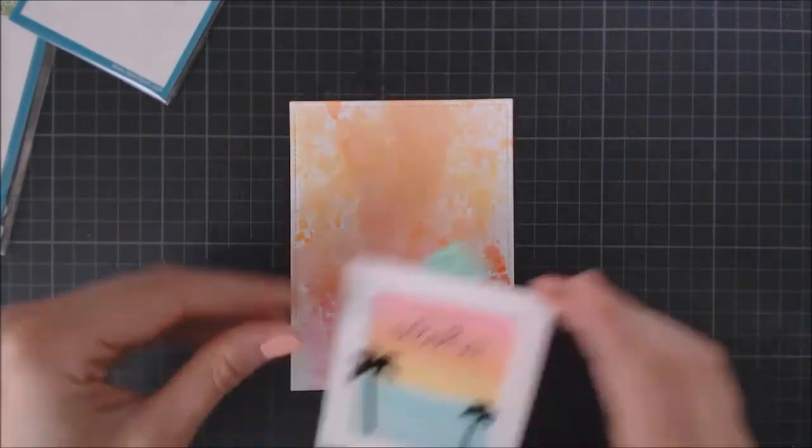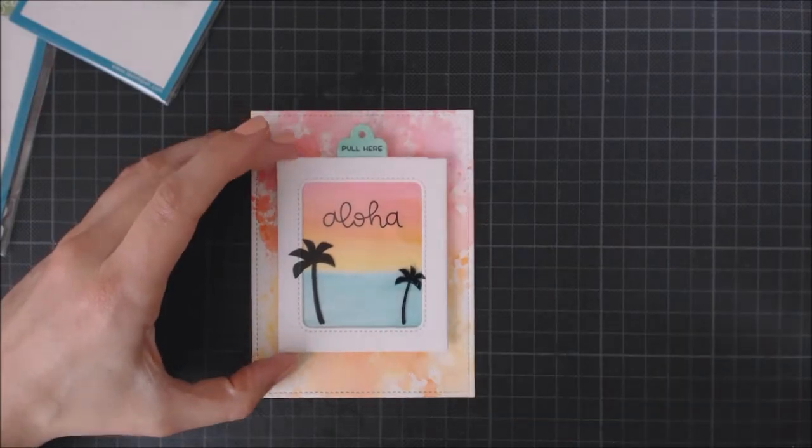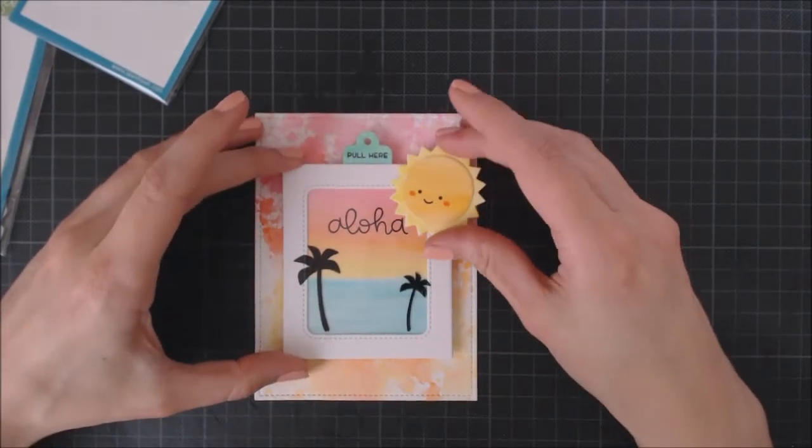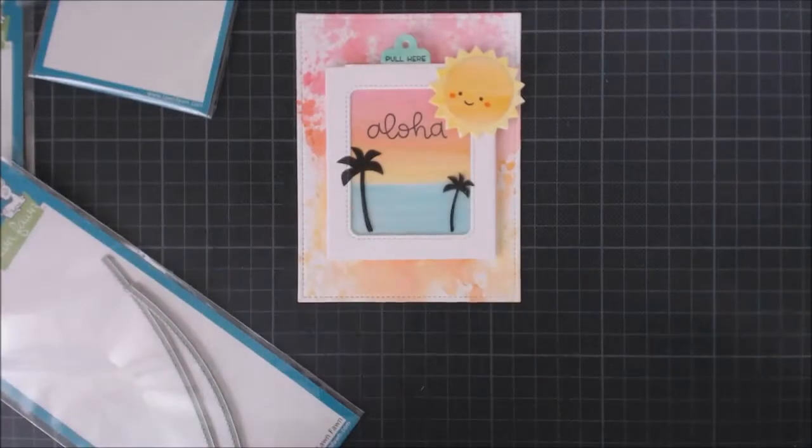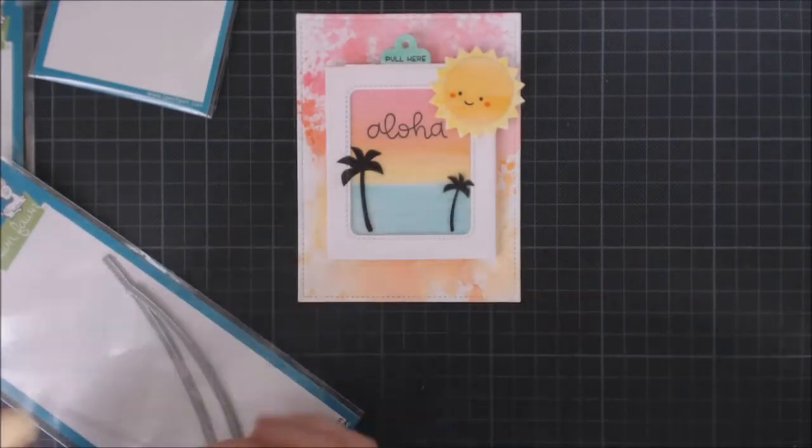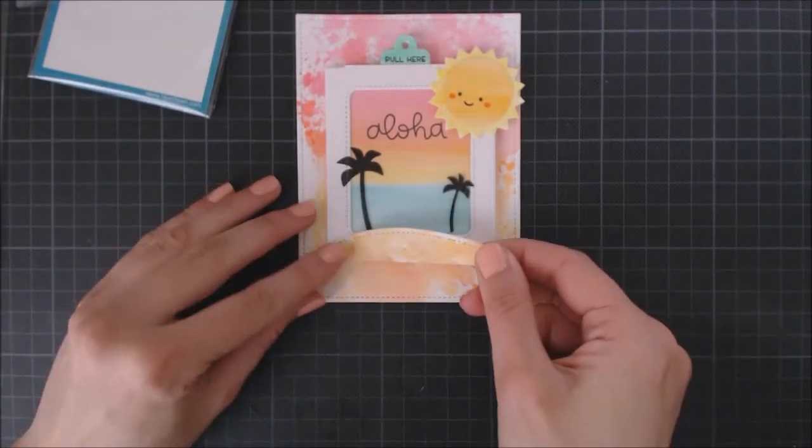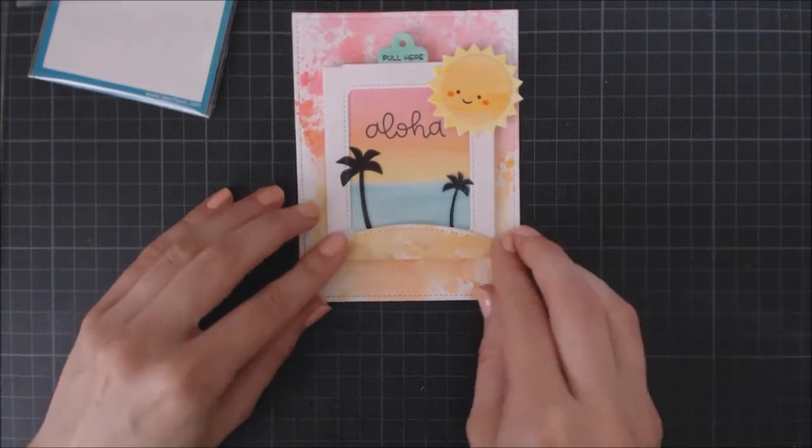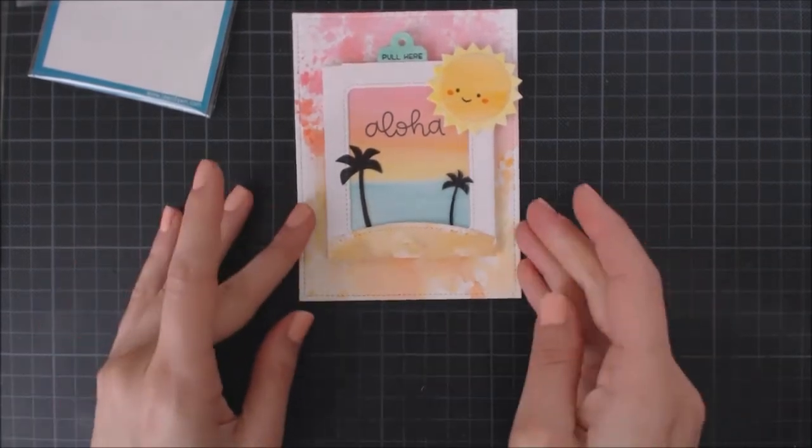At this point I felt that those palm trees needed some ground under them, so I die cut a little hill out of watercolor paper using the Simple Stitch Hillside Borders and I colored it with my Tombow markers just like I did on my background.